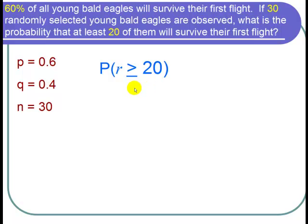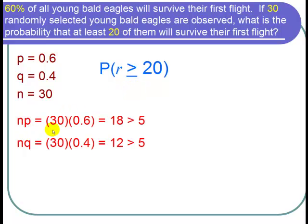Let's check to see if we can use a normal approximation for this binomial distribution. To do that we check np, which is 30 times 0.6, which is 18, and that's certainly greater than 5. And nq is 30 times 0.4, which is 12, and that's also greater than 5. So because np and nq are both greater than 5, we can use the normal distribution to approximate the binomial.